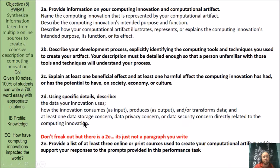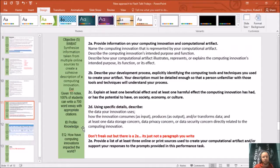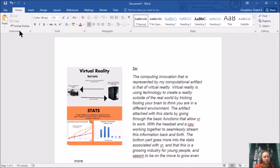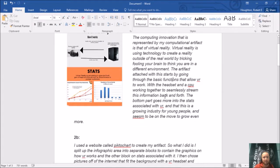This slide shows basically what you'll be staring at when the performance task is in front of you — 2A, 2B, 2C, 2D, and 2E. For 2E, you're not writing a paragraph — you're just providing a list of at least three online or print sources used to create your artifact and/or support your responses. I'll now go over to a Word document to show you what the essay would look like. I highly suggest opening a Word document because right at the bottom it shows your word count at 751 words. You can then copy and paste it onto Canvas to post and share your work.